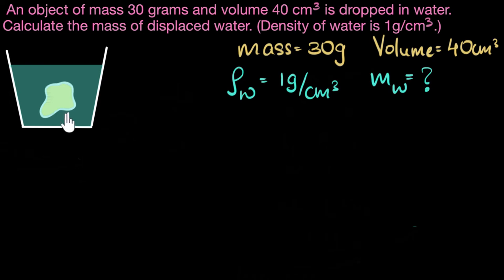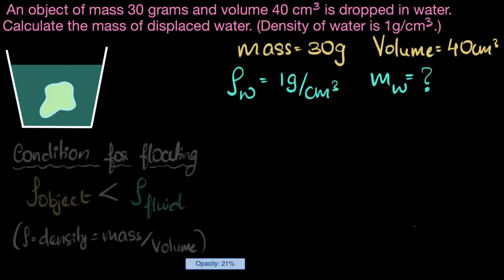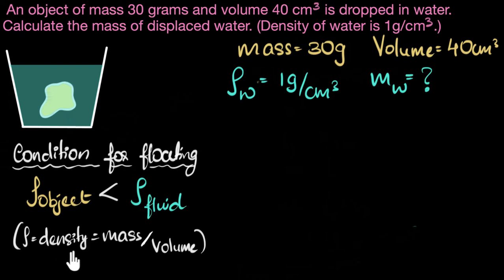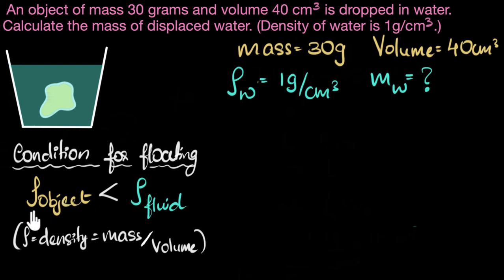How do we figure out whether this is going to float or sink? The condition for floating is that the density of the object — rho means density — should be smaller than the density of the fluid, in this case the density of water. If this stone has smaller density than water, it will float; if it has larger density than water, it will sink. We calculate density as mass divided by volume. So the first step is to calculate the density of our stone.